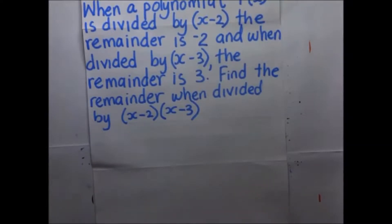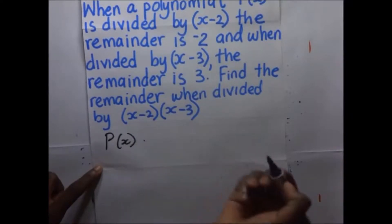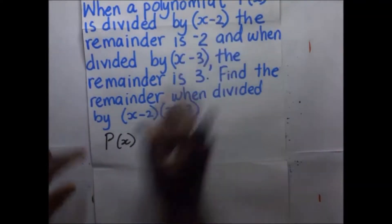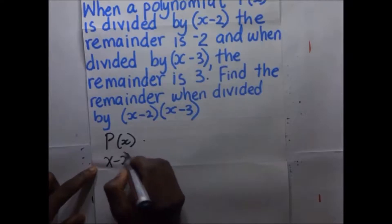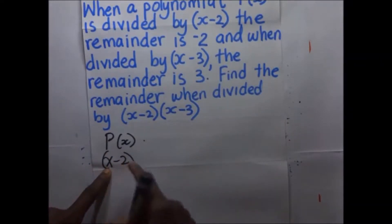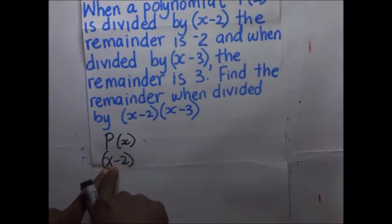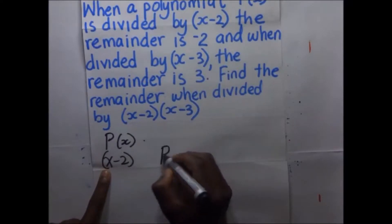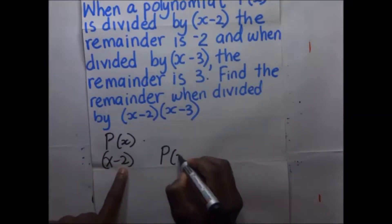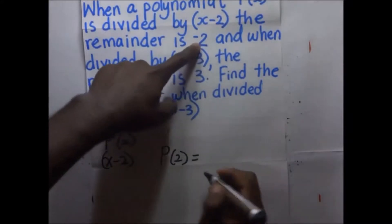Our polynomial is P of X. When it's divided by X minus 2, it means the value of X is going to be 2, because X minus 2 equals 0, making X equal to 2. So P of 2 is equal to the remainder, which is negative 2.